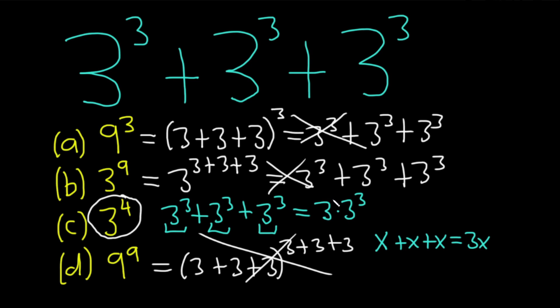And now you can use properties of exponents. There's a one here. And because the bases are the same, you basically just add the exponents. So this is equal to 3 to the fourth. So that would be the correct answer.